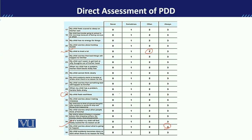'My child feels worthless' — if applicable, you rate it. This scale covers depression, anxiety, phobias, and internalized problems. We have a composite score, and the depression problem is assessed separately. Based on these results, we determine whether to move toward a diagnosis of Persistent Depressive Disorder or not.